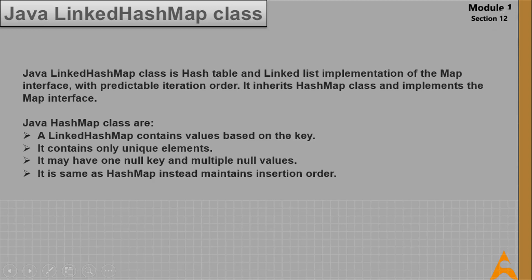Now let's discuss LinkedHashMap. Java LinkedHashMap is a hash table and linked list implementation of the Map interface with predictable iteration order. It inherits HashMap and implements Map interface. Key points: it contains values based on key, contains only unique elements, may have one null key and multiple null values, and is the same as HashMap except it maintains insertion order.